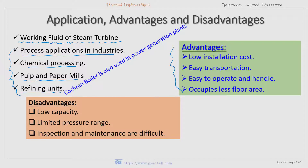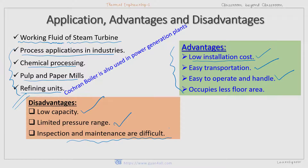Some advantages: low installation cost, since this is a low pressure, low capacity boiler. Transportation is easy. Operation and handling are also easy. It occupies less floor area, though vertically it occupies more space. Some disadvantages are: low capacity, limited pressure range — it is a low pressure boiler. Inspection and maintenance are difficult because it is a small-sized boiler.